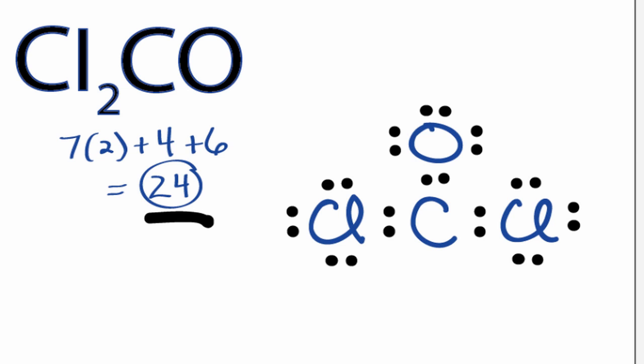So we've used all 24 valence electrons, but the central carbon only has 6 valence electrons. The other atoms do have octets with 8, so we need to fix that. We can take 2 valence electrons from the oxygen here and share them between the oxygen and the carbon to form a double bond.